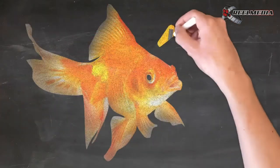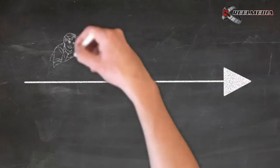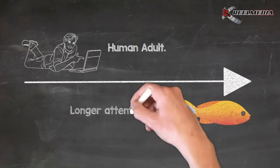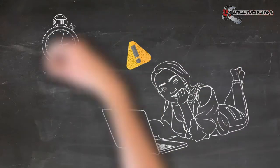Goldie has creepy, bulging eyes and an attention span of 9 seconds. What's troubling is Goldie's attention span is actually longer than yours. The average human adult has an 8-second attention span.